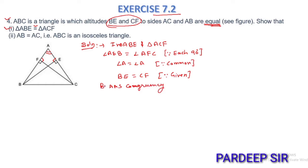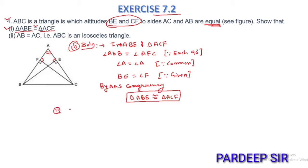These two triangles are congruent: triangle ABE is congruent to triangle ACF. So you can see the first part of the solution — triangle ABE is congruent to triangle ACF.